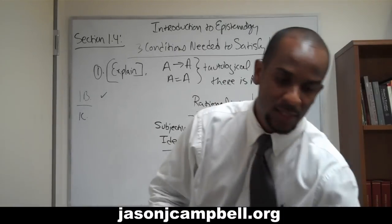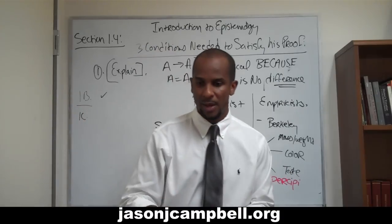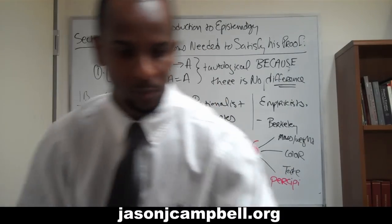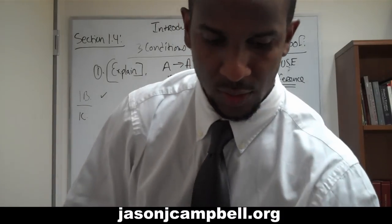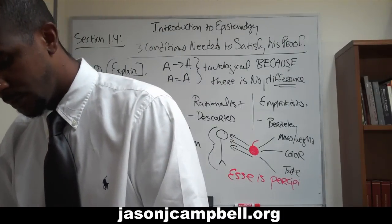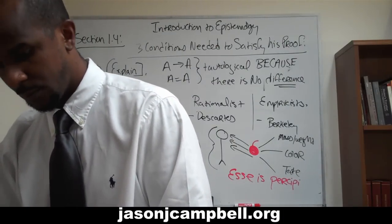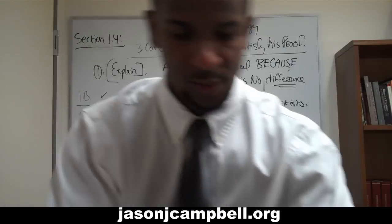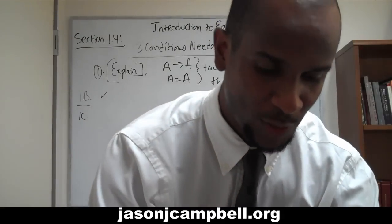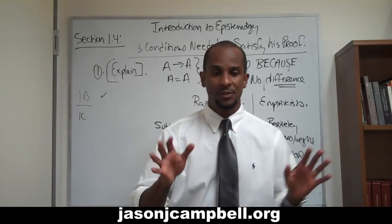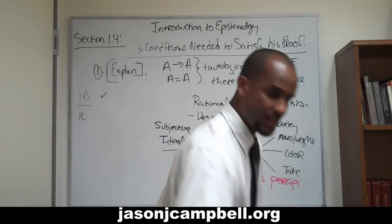So Moore says that this argument — the misprint example — is just like the hand demonstration. He gives the misprint example as yet another demonstration of epistemological knowledge of proof.